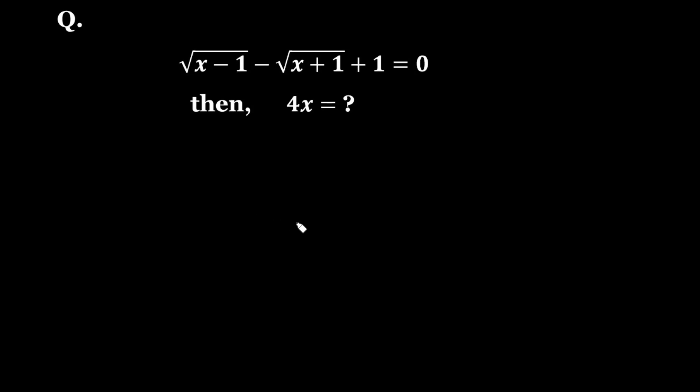Hi everyone, in this video we will discuss a radical equation problem. The question says: square root of x minus 1 minus square root of x plus 1 plus 1 equals 0. Then what is the value of 4x?